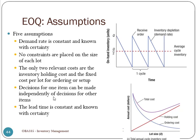Number four: decisions for one item can be made independently of decisions for other items. The EOQ is calculated for each individual item independently — we don't consider the impact of one EOQ on another product. But in actuality, we need to consider them together.